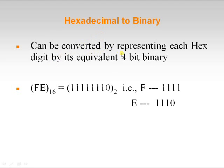Hexadecimal to binary can be converted by representing each hex digit by its equivalent 4-bit binary. As we know, hexadecimal numbers range from 0 to F — there are totally 16 symbols used in hexadecimal representation. What we have to do is represent each and every hex digit with the help of its 4-bit binary equivalent.